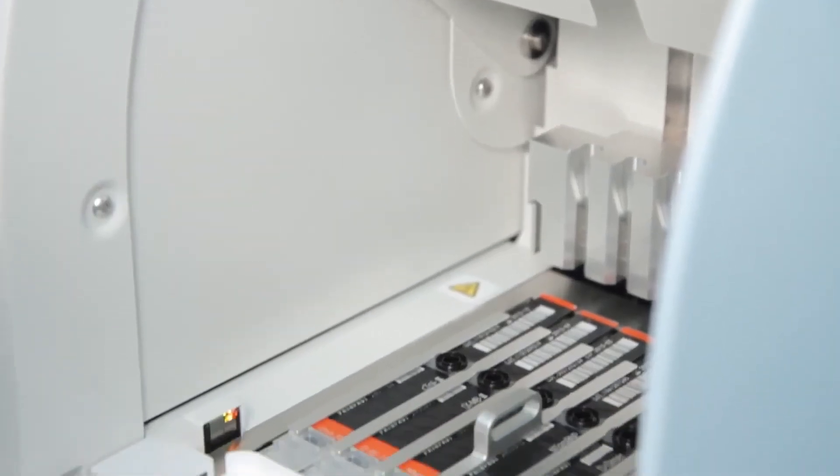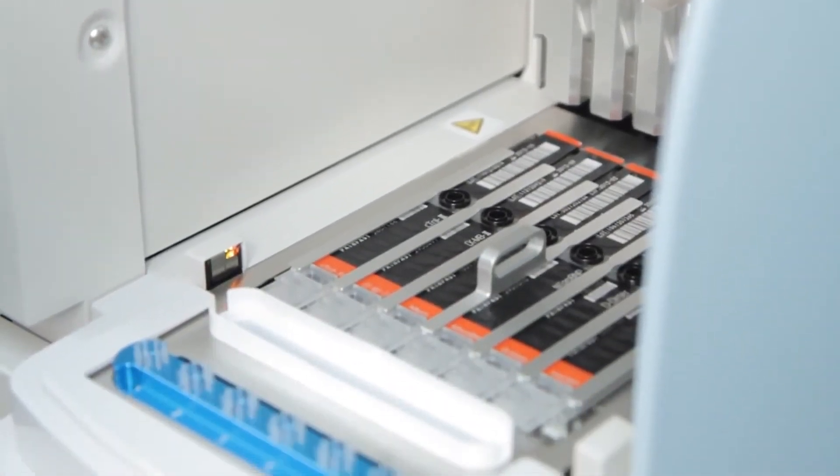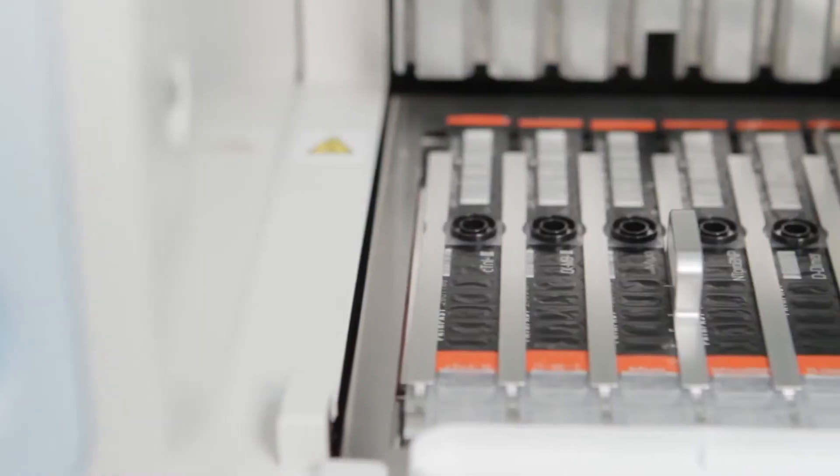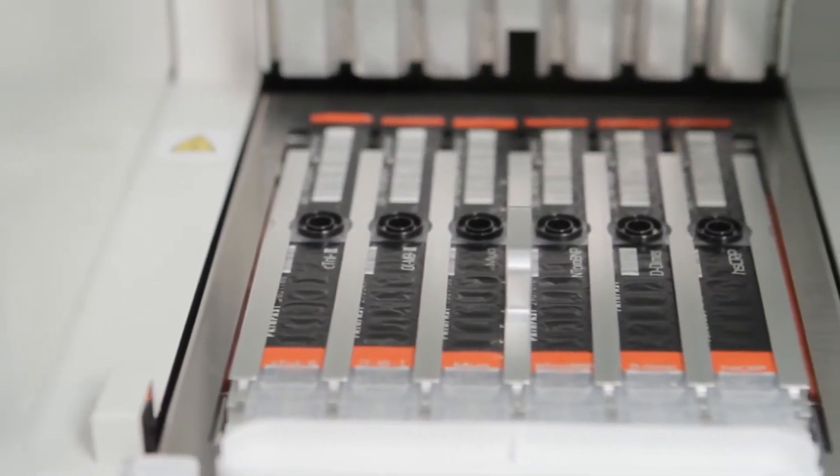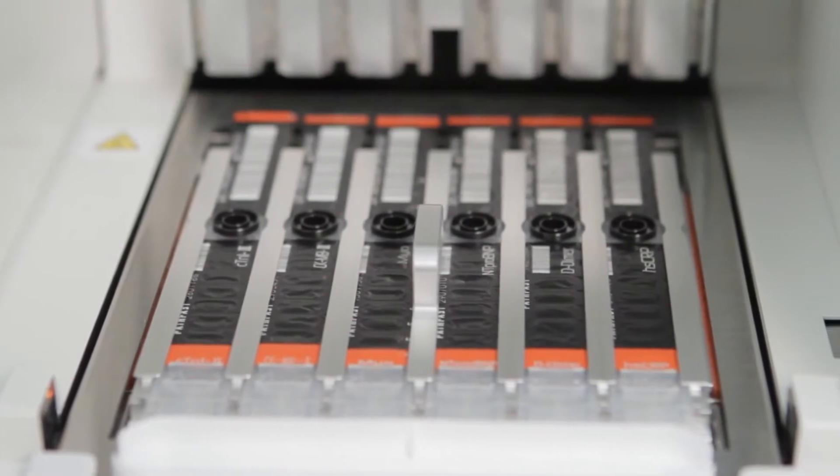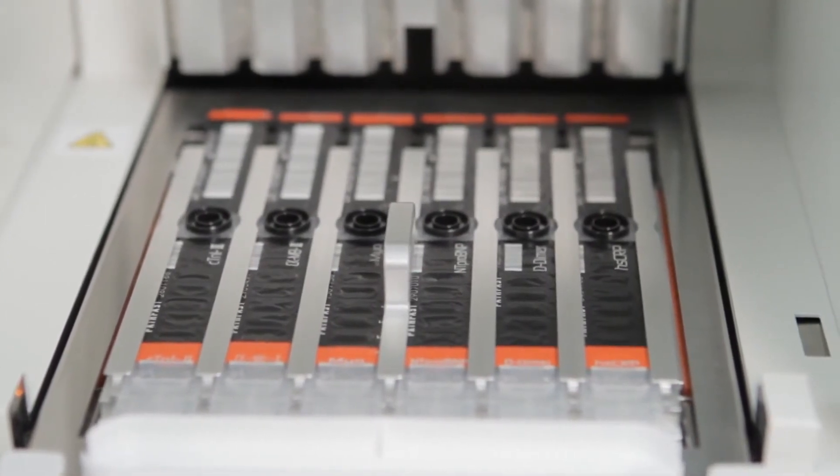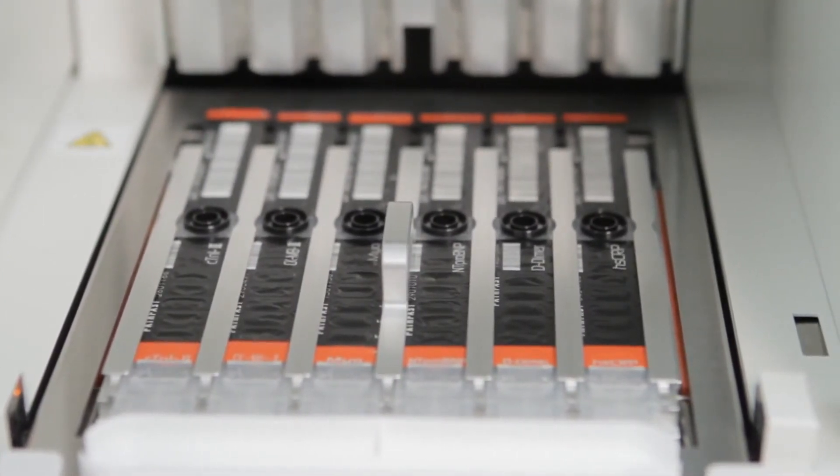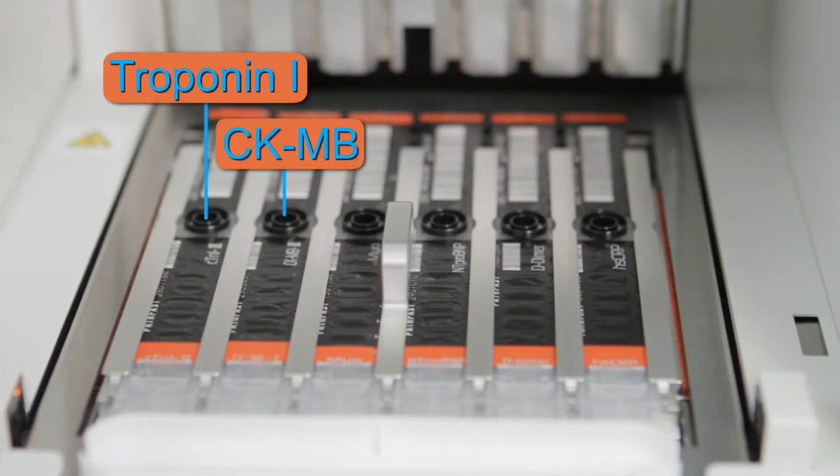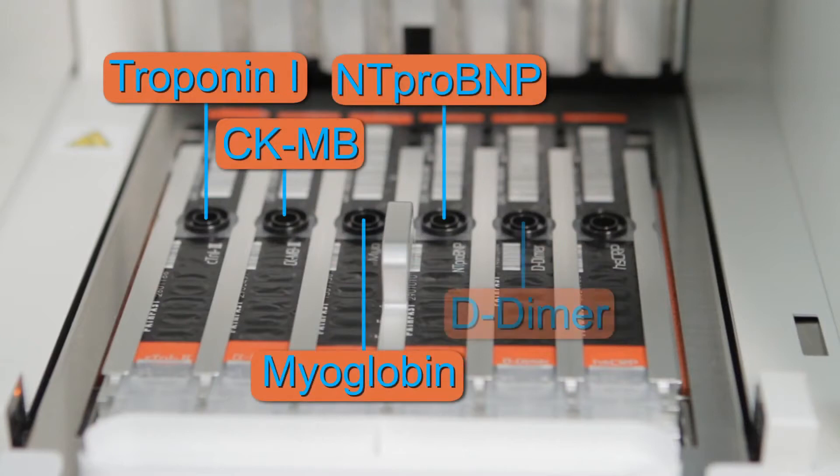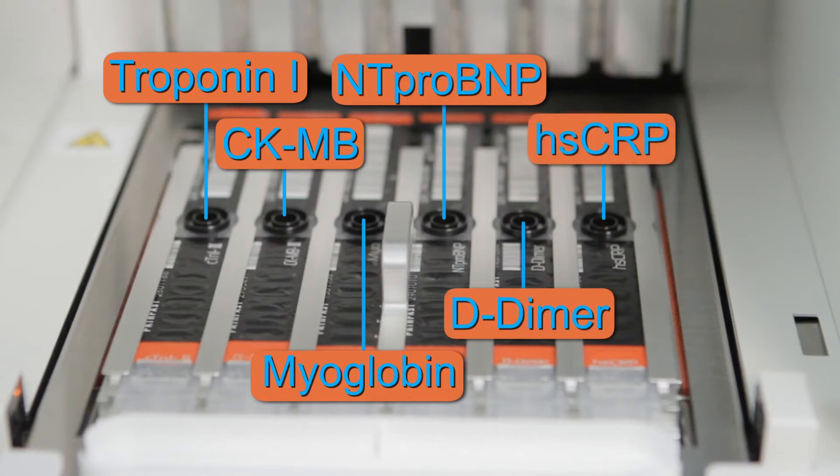The PathFast features six parallel channels that allow up to six samples or six tests for one sample to be run simultaneously, creating flexibility not seen with other systems. It allows you to test for troponin I, CKMB, myoglobin, NT-ProBNP, D-dimer, and high-sensitive CRP.